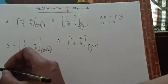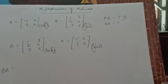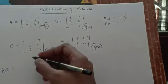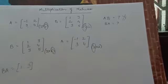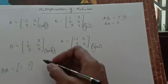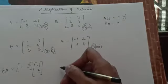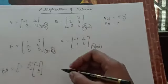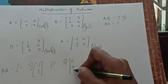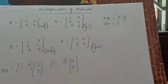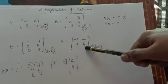We will be writing BA, because AB is not possible. In BA, we take the first row of B — which is 1, 3 — and multiply it with the first column of A — which is minus 1, 3. Then we take the same first row 1, 3 and multiply it with the second column of A. First row is multiplied with the first column, then the same row is multiplied with the second column.